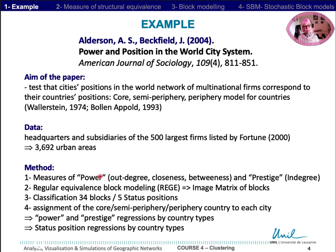They followed four steps as a method. First, measuring different power of the cities — power and prestige. Then, they measure regular equivalence by block modeling and identify blocks. Then, they classify 34 blocks into five different status positions, and finally, they confront these positions to the core, semi-periphery, and periphery model.